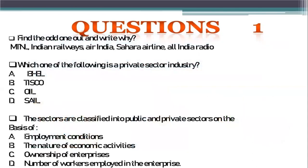I have three questions for you to answer in the comments section of this video. First, odd one out — and why: MTNL, Indian Railways, Air India, Sahara Airlines, and All India Radio. Second, which one of the following is a private sector industry: SAIL, ONGC, or others listed on screen — find out their full forms yourself. Third, on what basis are sectors classified into public and private? I want to see all three answers in the comments.